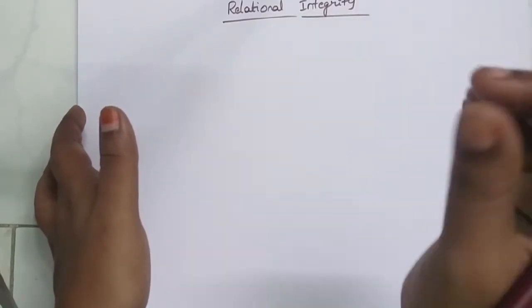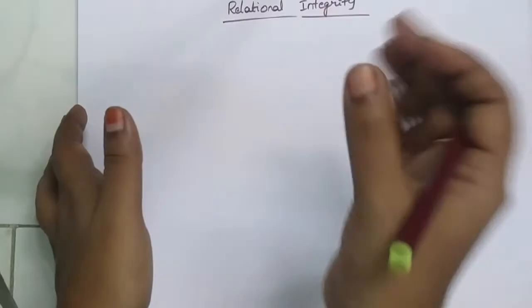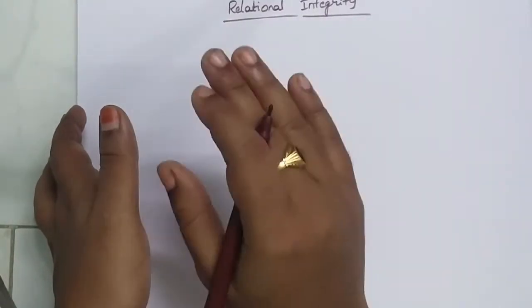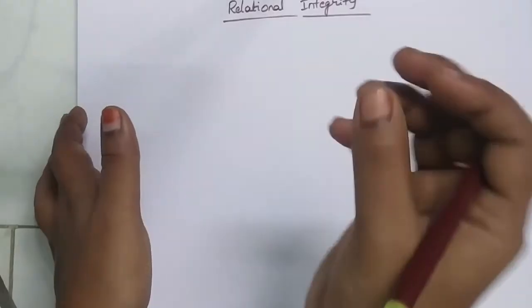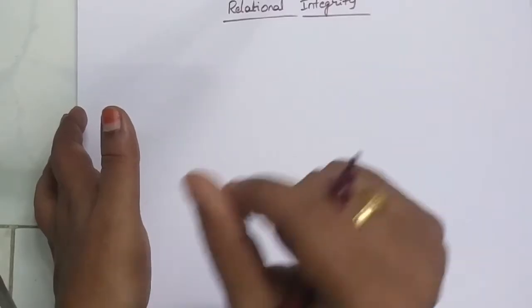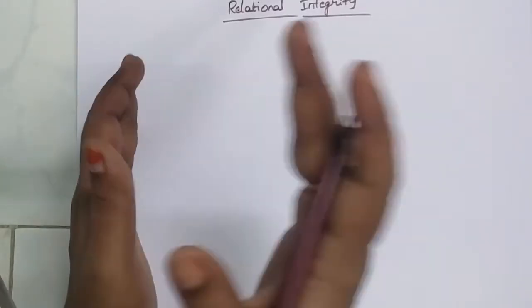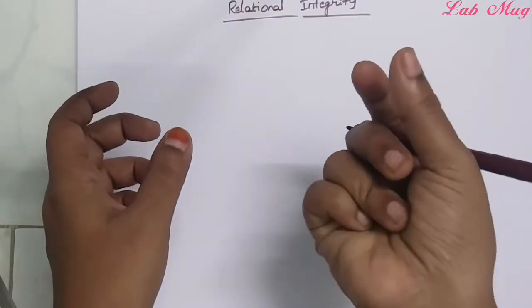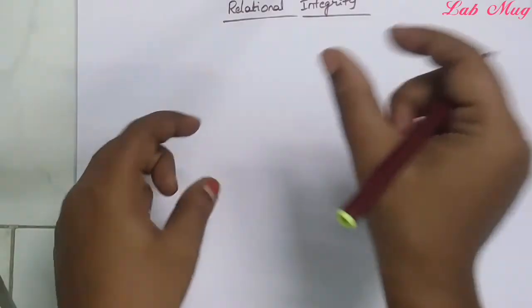I am going to talk about perfectness — that is correctness and completeness. So that concept is called integrity.